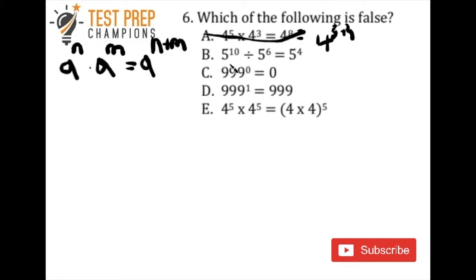Okay, so the next one, 5 raised to the 10th power divided by 5 raised to the 6th power equals 5 to the 4th. So again, we've got to know an exponent rule here. And that rule is that whenever you've got a base raised to any number divided by that same base raised to a different number, we can rewrite that as the base raised to n minus m.